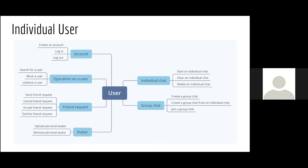The individual user is the main actor in our use cases — the individual private end user of the application. We divided use cases into categories, starting with basic functionalities such as account-related ones. We also have operations like searching for other users and blocking or unblocking them.